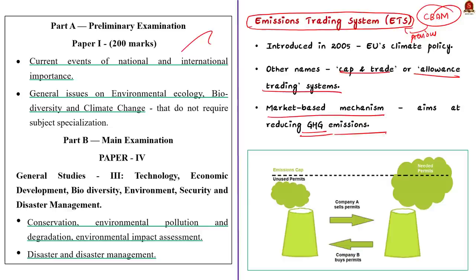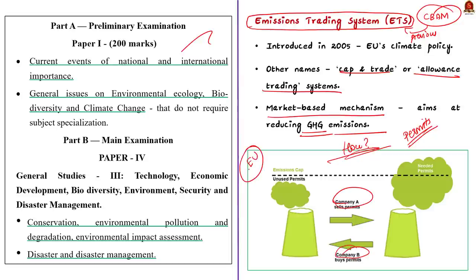How does the Emissions Trading System help in reducing greenhouse gas emissions? Under the ETS, emission permits or allowances are sold or allocated to the entities included in the ETS. For example, assume there are two steel producing companies A and B located in any one of the EU countries and both are included in the ETS. While producing steel, greenhouse gases are emitted, so both A and B tend to emit greenhouse gases.